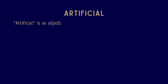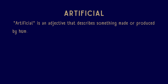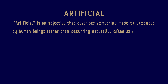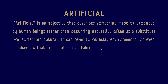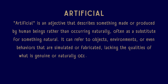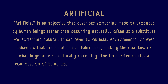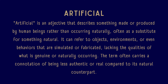Artificial is an adjective that describes something made or produced by human beings rather than occurring naturally, often as a substitute for something natural. It can refer to objects, environments, or even behaviors that are simulated or fabricated, lacking the qualities of what is genuine or naturally occurring. The term often carries a connotation of being less authentic or real compared to its natural counterpart.